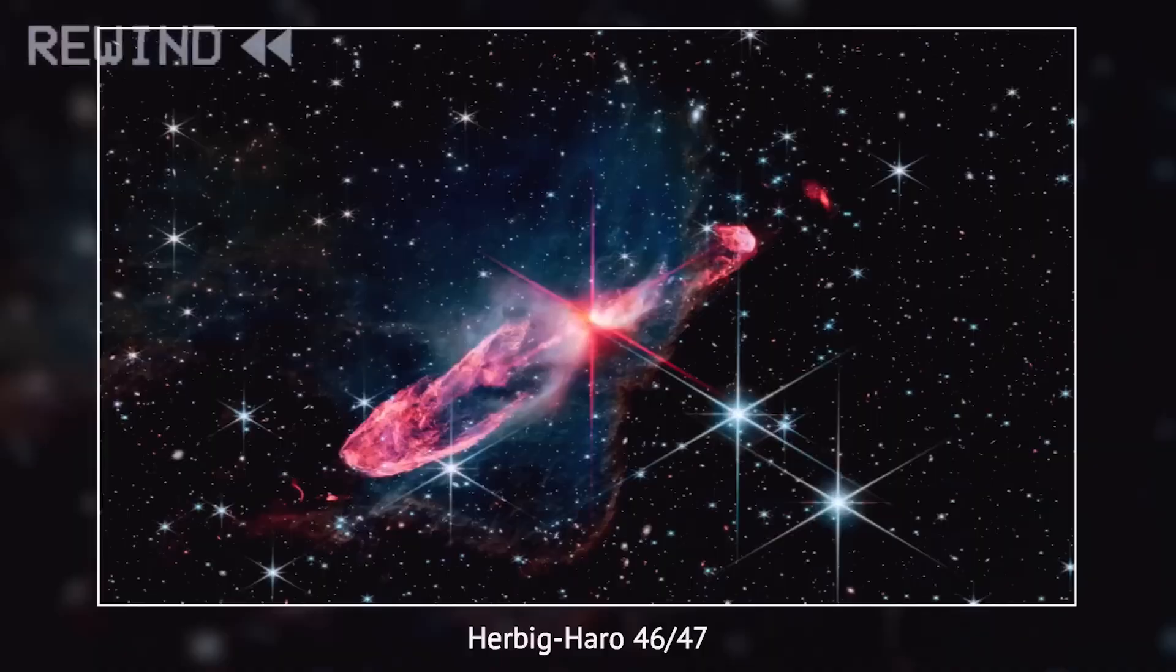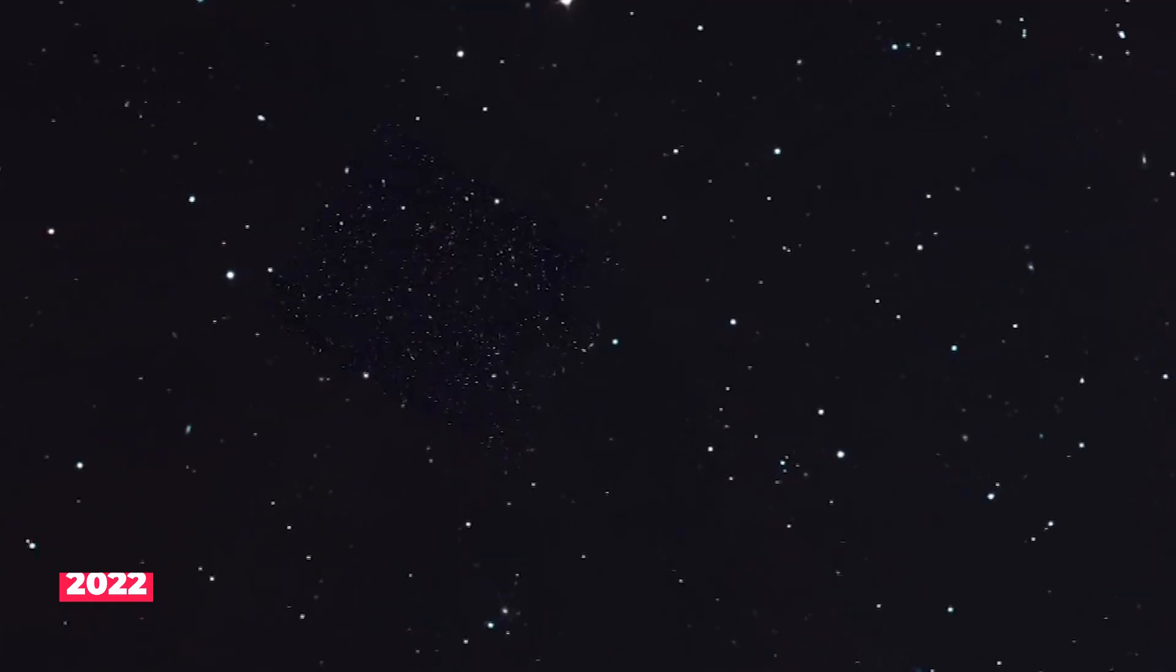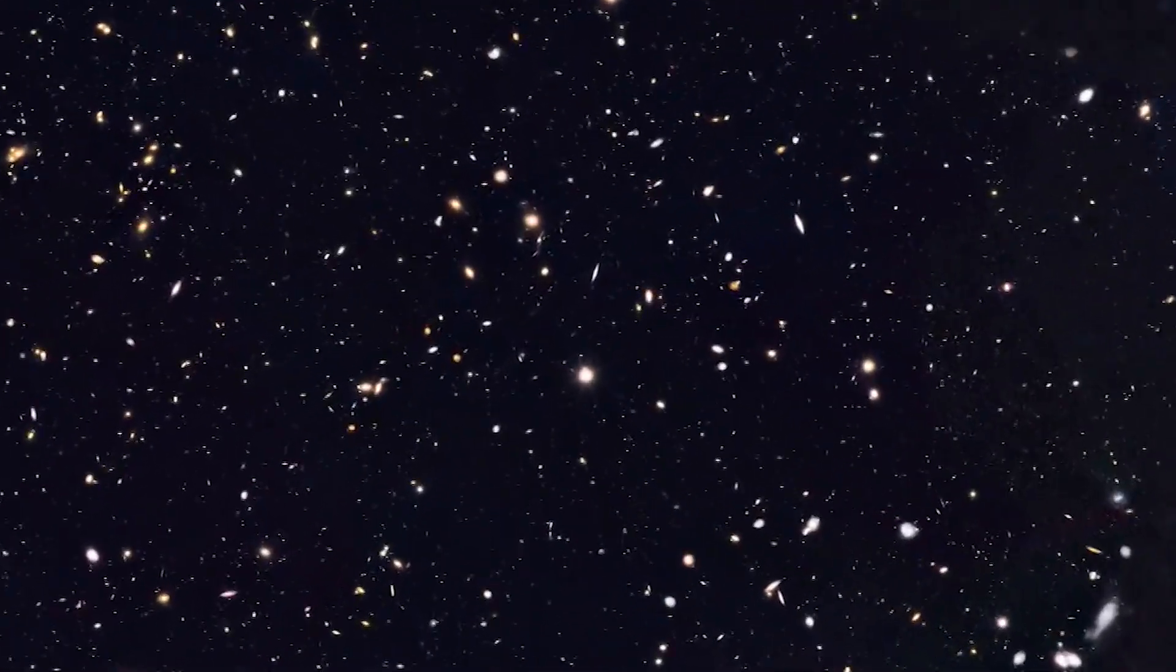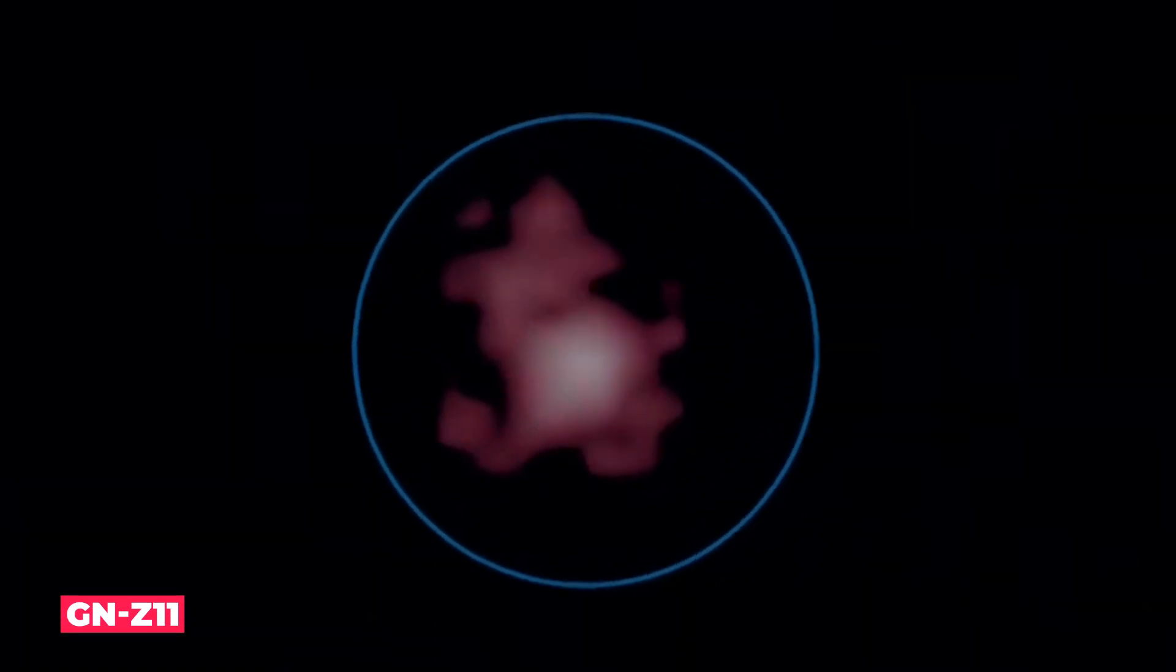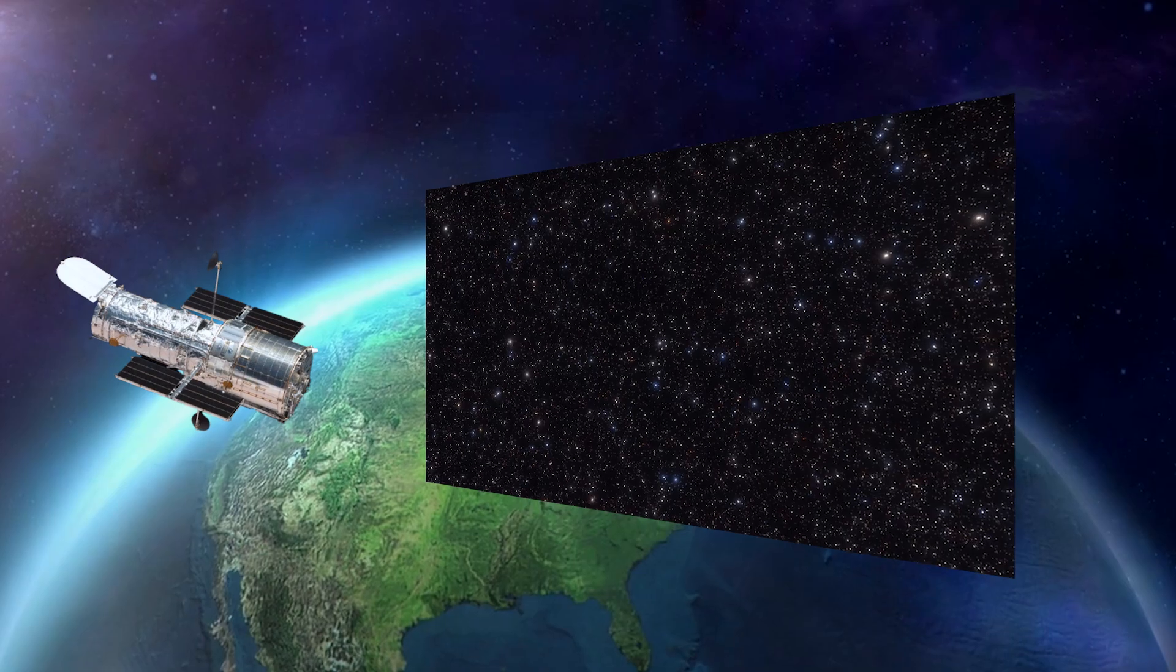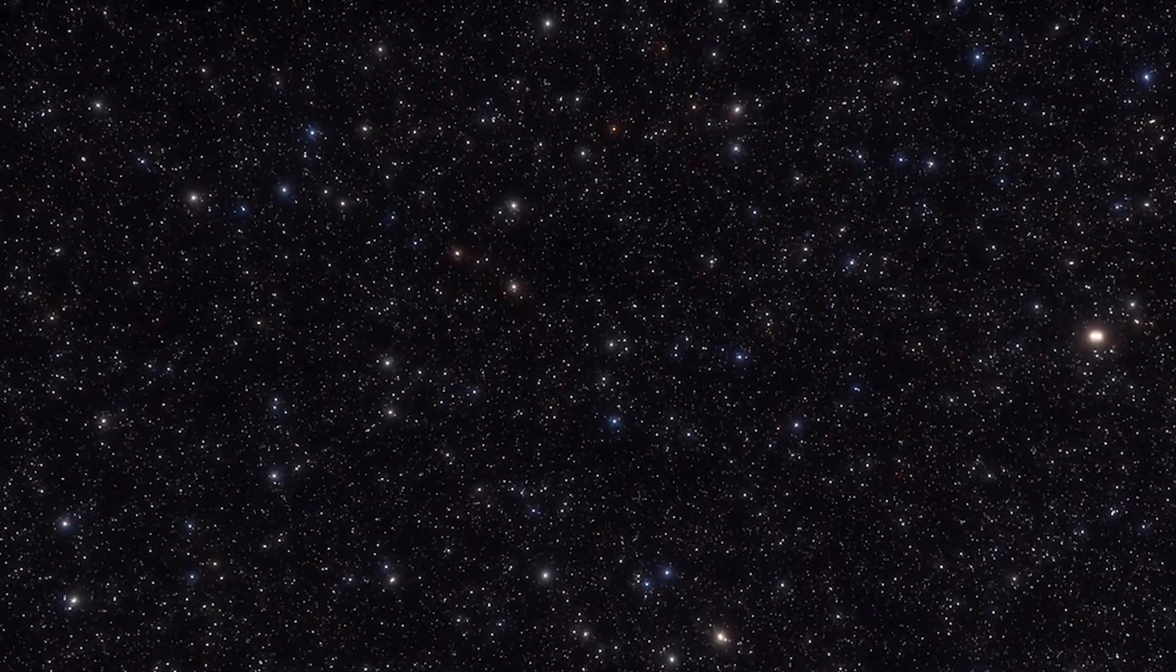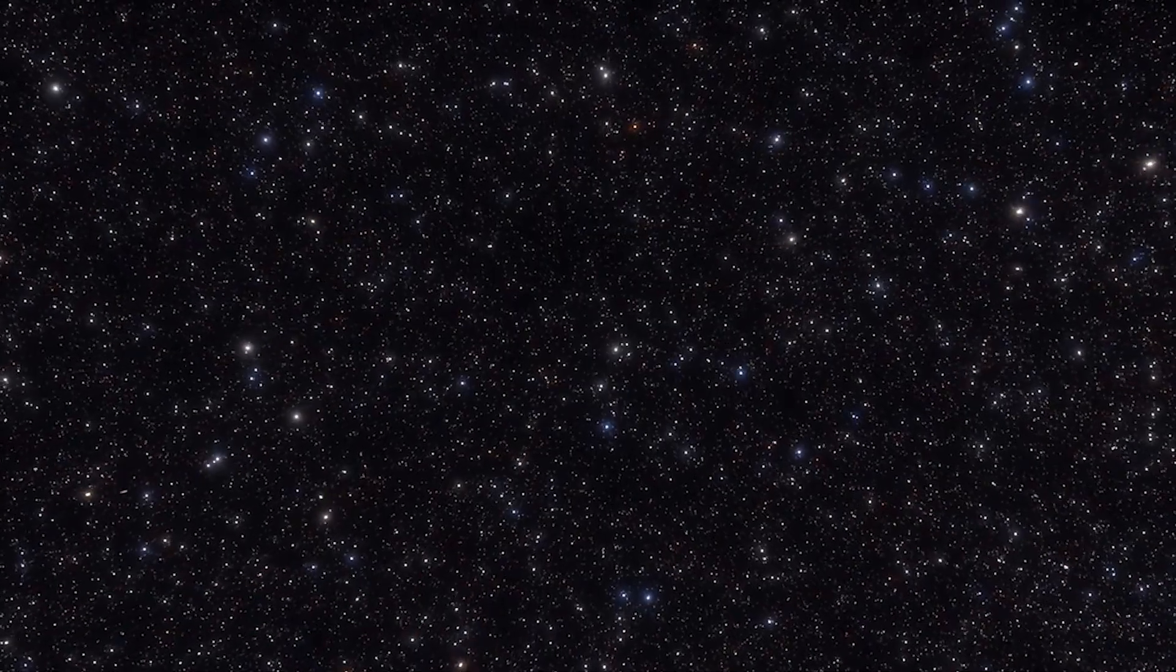But before we answer that, let's rewind. Not to the dawn of time, but to just a couple of years ago, 2022. Until 2022, the most distant confirmed galaxy ever observed was GNZ 11. Spotted by the Hubble Space Telescope, it had a redshift of 11.1, meaning we were seeing it as it appeared about 400 million years after the Big Bang.